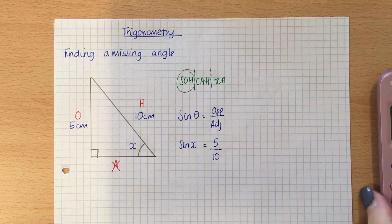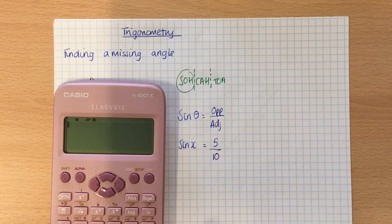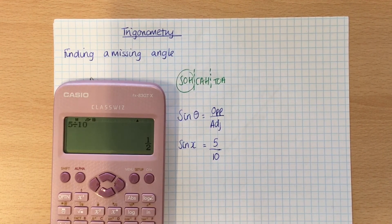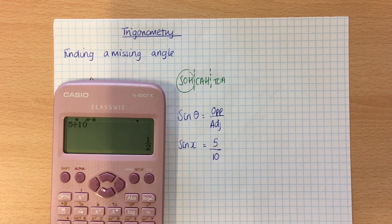Now, we're working out the size of an angle, so what you could do is you could now put this in your calculator, and you do 5 divided by 10, and it would tell you a half, which is 0.5. So, sine X equals 0.5.